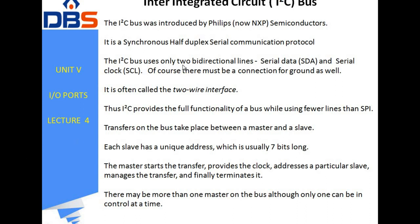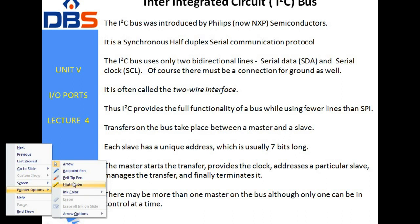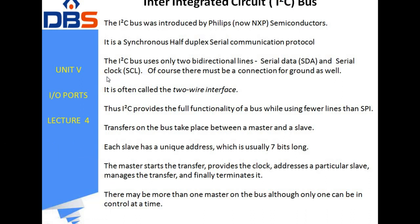The I²C bus uses only two bi-directional lines: serial data (SDA) and serial clock (SCL). The serial clock is generated by the master itself. These two signal lines are connected between the microprocessor and the controller. It is often called a two-wire interface, one for communication and one for ground.